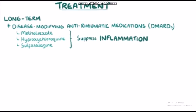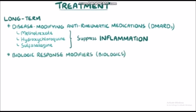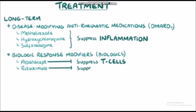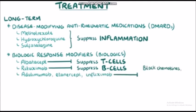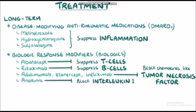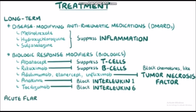In addition, there are a variety of medications called biologic response modifiers, or biologics. Some biologics, such as abatacept, work by suppressing the activity of T cells; others, such as rituximab, suppress B cells. There are also biologics such as adalimumab, etanercept, and infliximab that block various cytokines like tumor necrosis factor. Anakinra blocks interleukin-1, and tocilizumab blocks interleukin-6. Treatment of acute flares can be done with anti-inflammatory medications like NSAIDs, as well as short-term use of glucocorticoids.